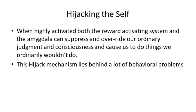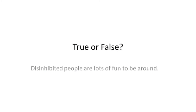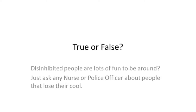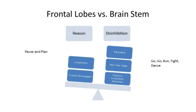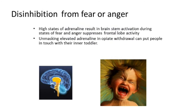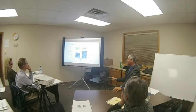This hijack mechanism is not just about addiction — it's about all kinds of thoughts and ideas. True or false: disinhibited people are fun to be around? Just ask any nurse or police officer about when people lose their cool. The frontal lobes help people keep their cool by inhibiting those animalistic impulses. There's a balance between the frontal lobes and the brain stem — the brain stem does the 'go, run, fight, or dance,' while the frontal lobes do the pause and plan, like a teeter-totter.